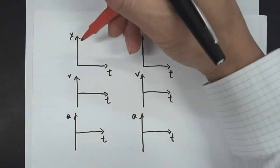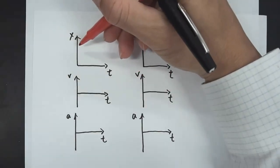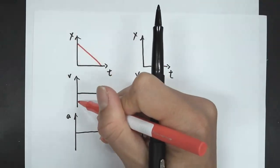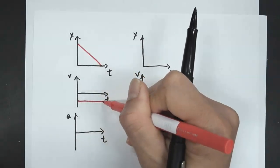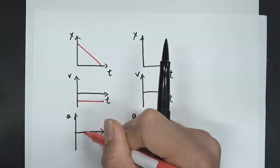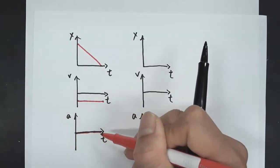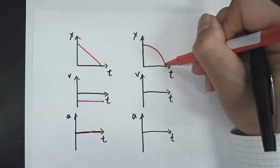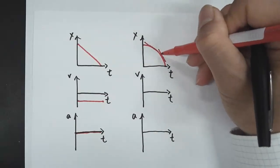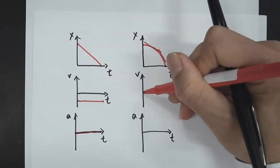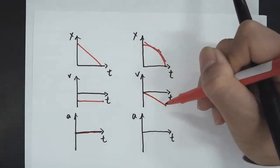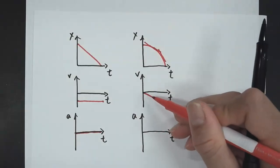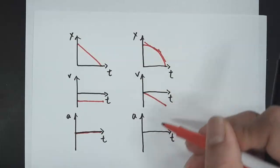Now we're going to look at a graph where the object is going towards the origin — backwards, toward the origin. This is a negative slope, and because it's a negative slope, the velocity will be negative. Because it's a constant velocity, the acceleration will be zero. Next, an object going in the negative direction but speeding up — the slopes are getting steeper and steeper in the negative direction, so the velocity becomes more and more negative. The acceleration is also negative.